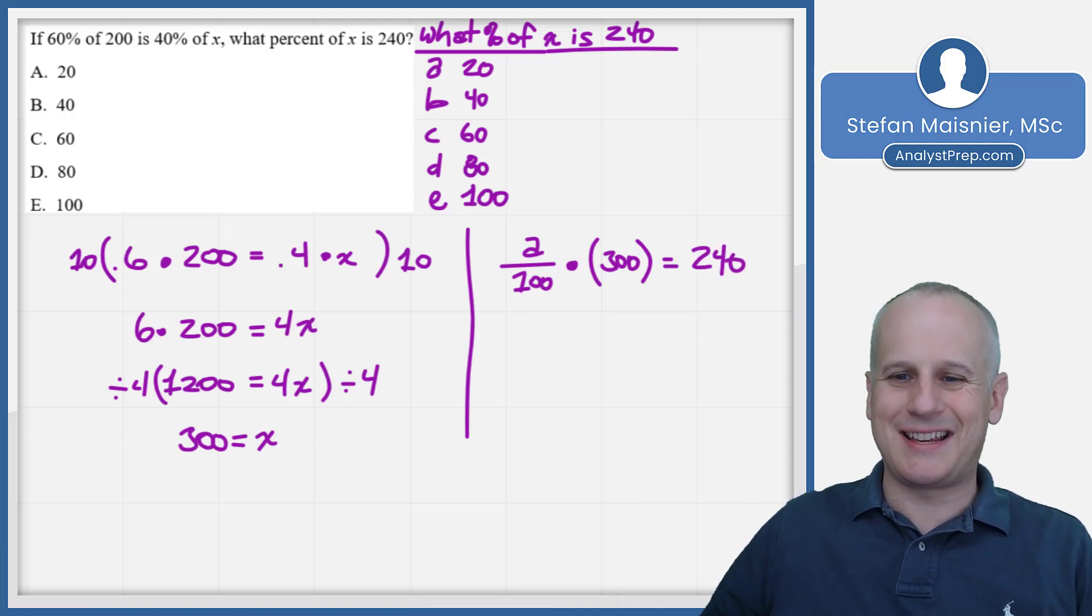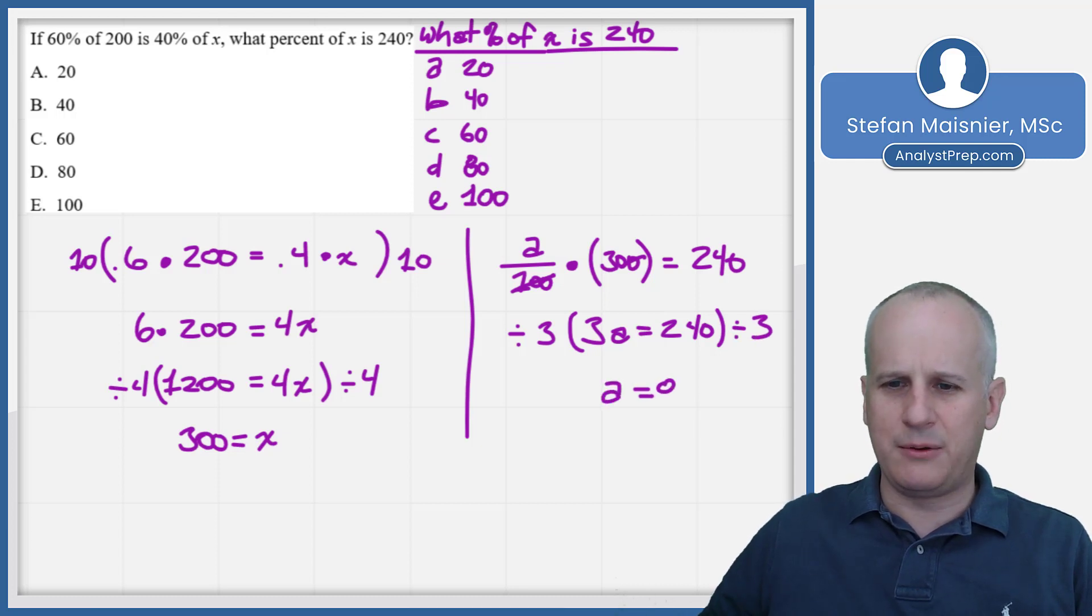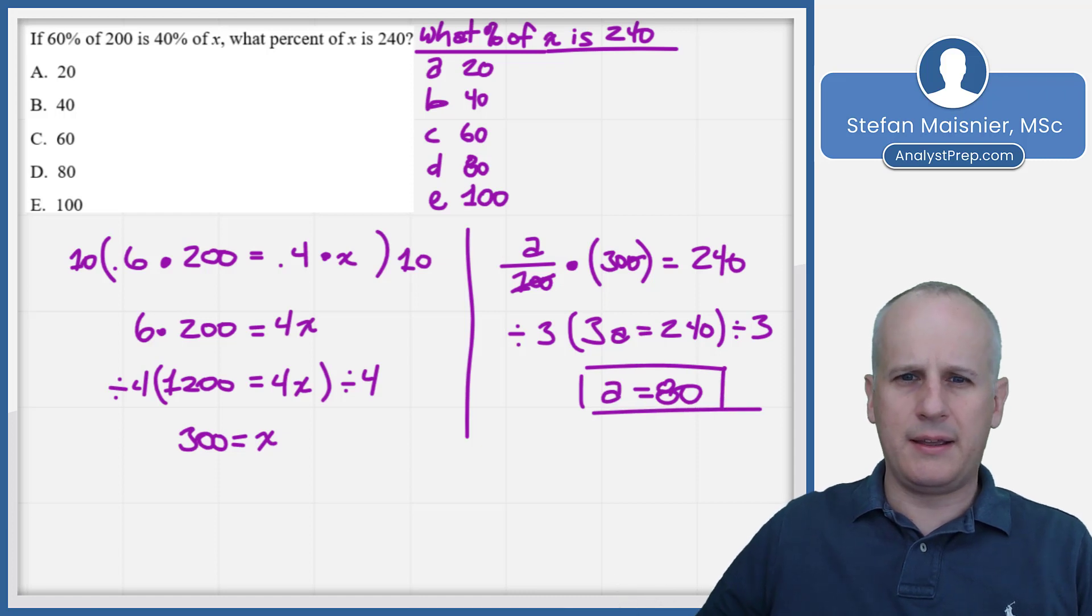Now I can just cancel the 300 with the 100 to get down to 3a is equal to 240, and we divide both sides by 3 to discover that a is equal to 80. And 240 is 80% of 300.